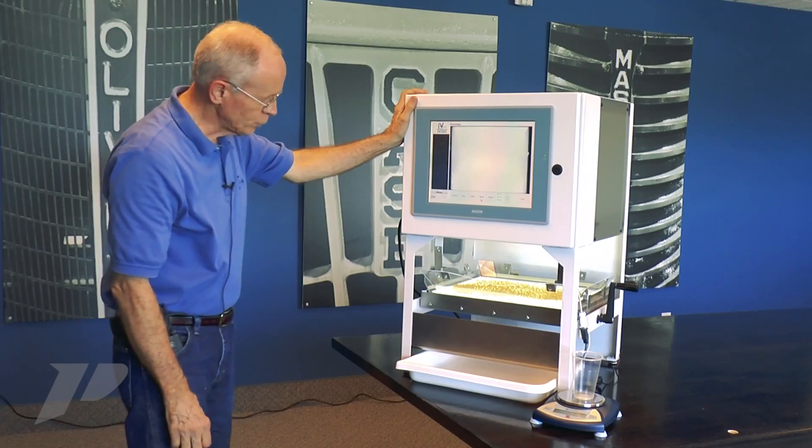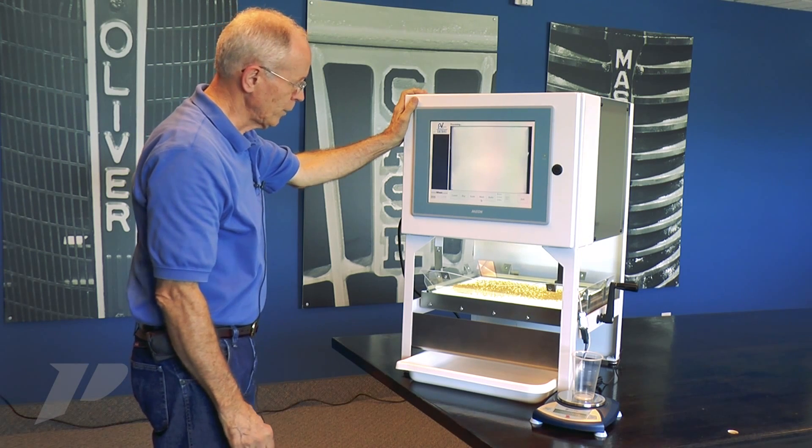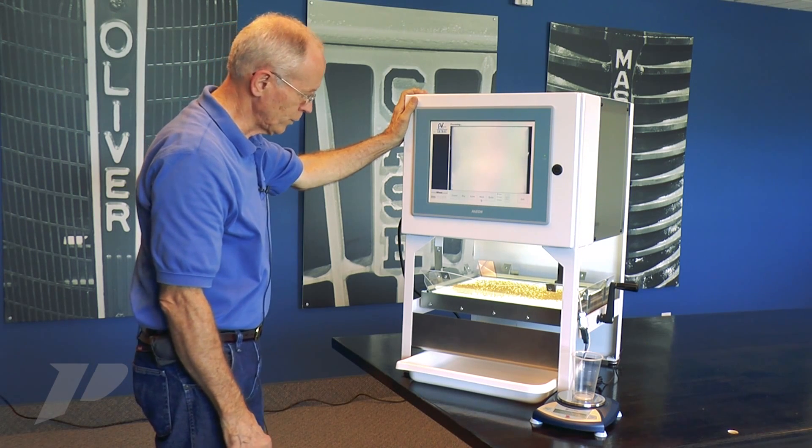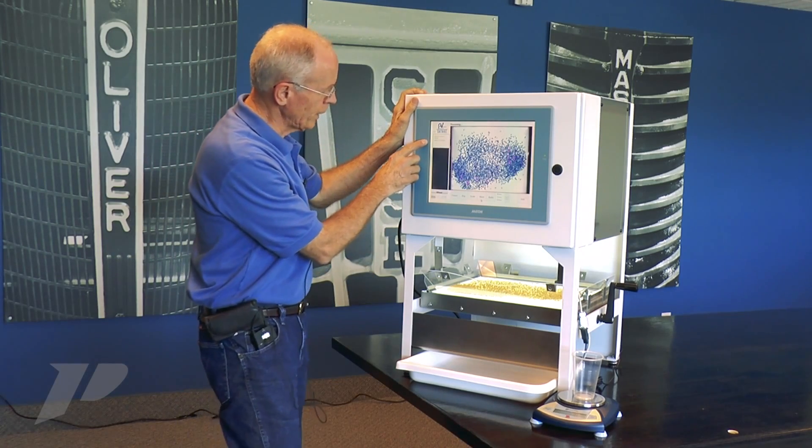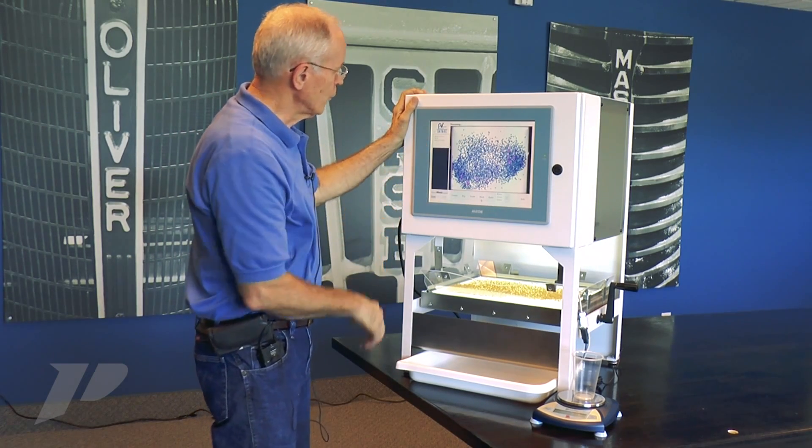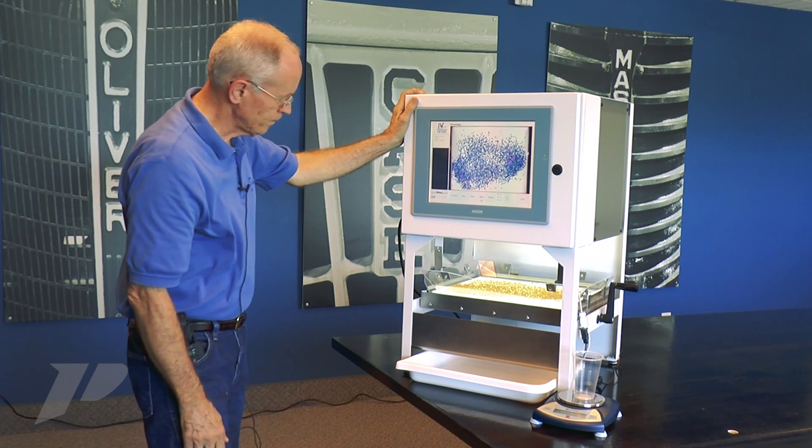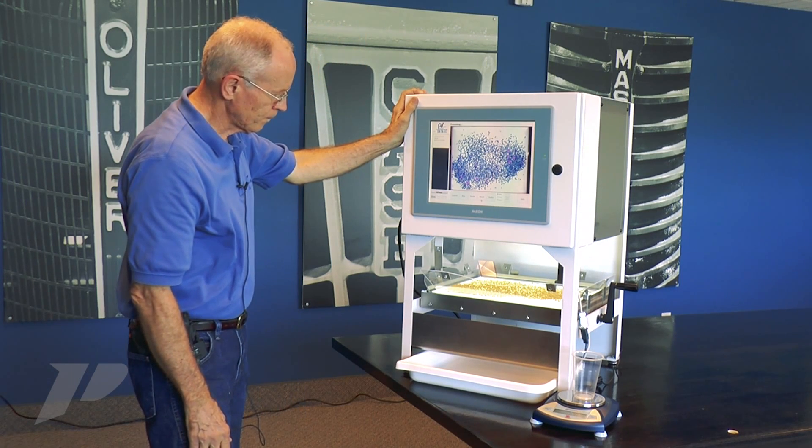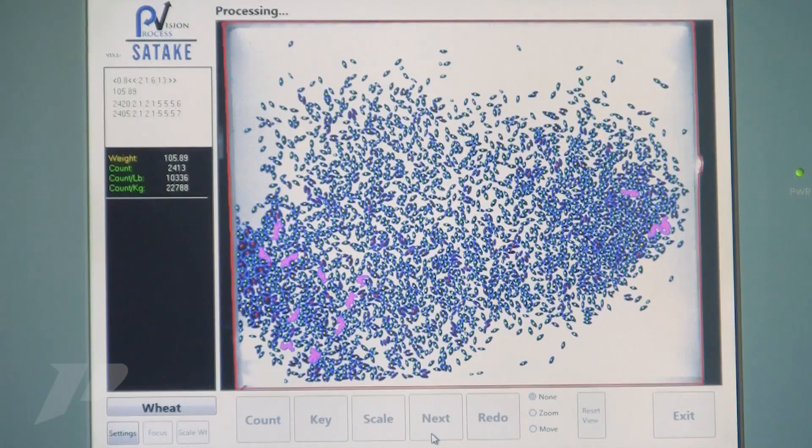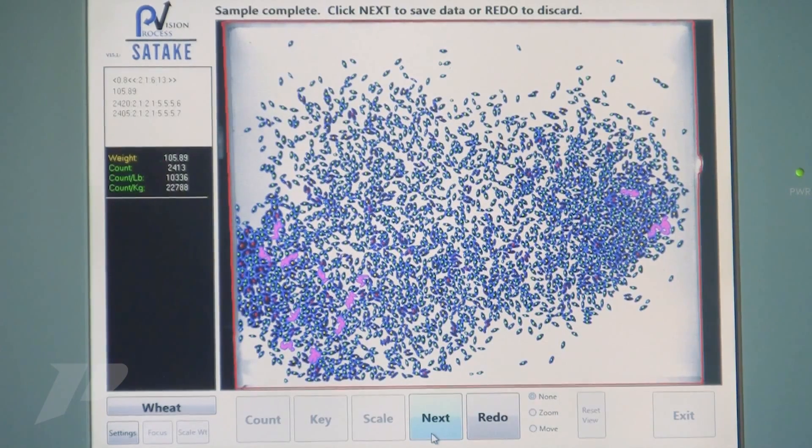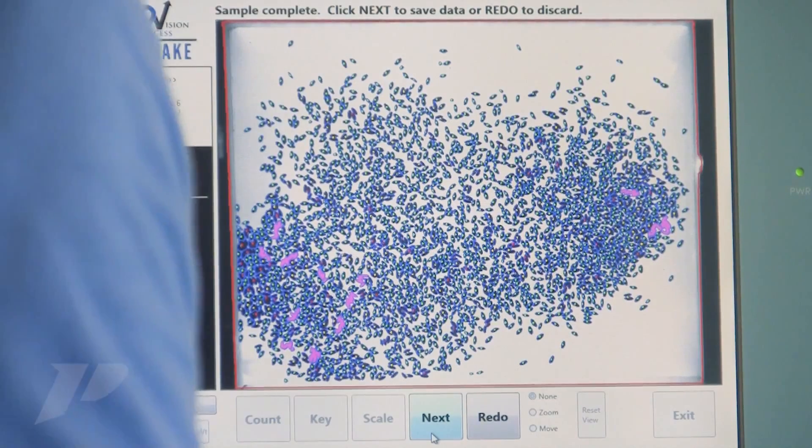We'll take an image and process that image. We're going to count the kernels on the stage. We'll show you the count that we had and we'll vibrate and count again.